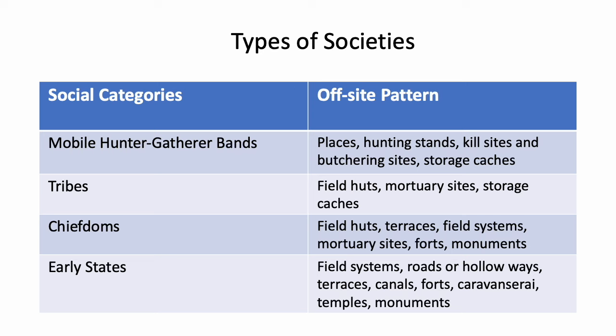For chiefdoms, we might expect to find field huts, terraces, field systems, mortuary sites, forts, and monuments of various kinds. For early state societies, we might expect to find field systems, roads or hollow ways, terraces, canals, forts, possibly caravanserai, temples, and monuments. While some of these things can also occur in settlements, quite a few of them only occur outside of settlements.